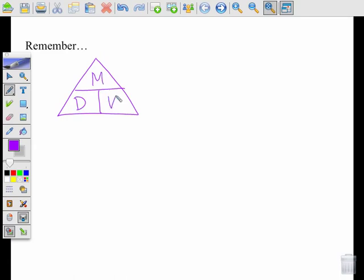V on the bottom. Remember that D stands for density, and its unit is going to be grams per milliliter, g/mL. M stands for mass, and its unit is going to be grams.